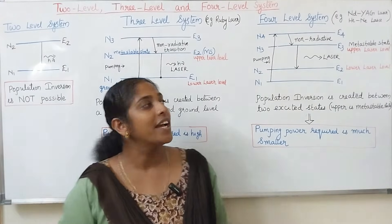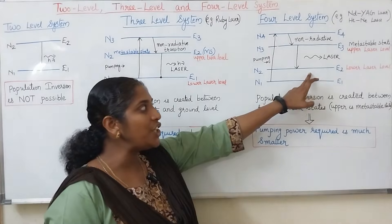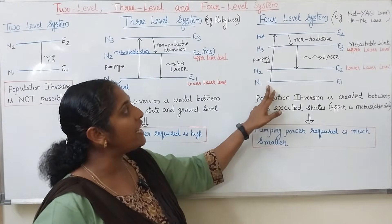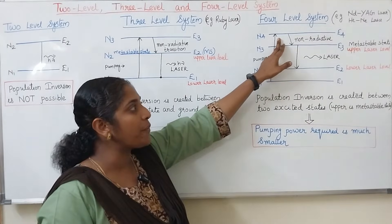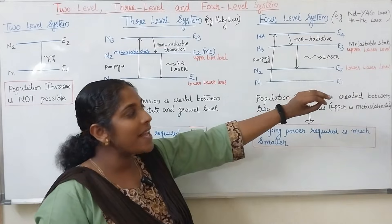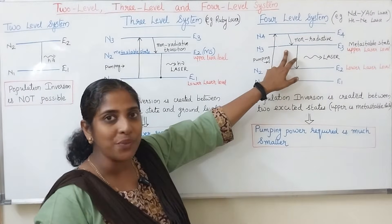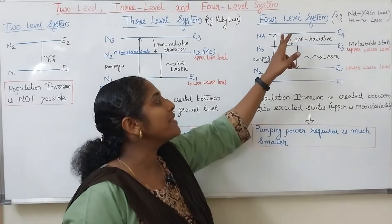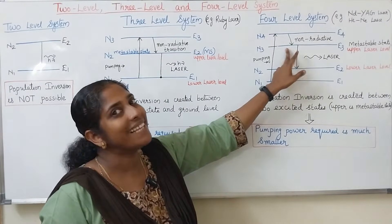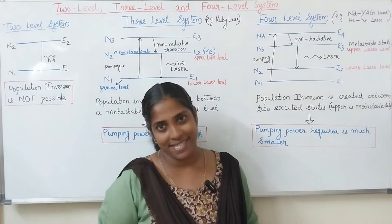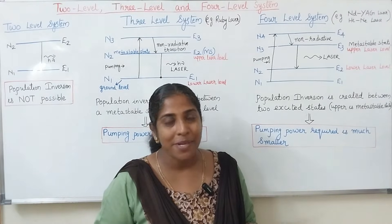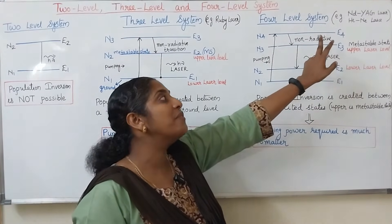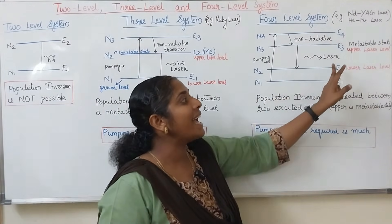Now coming to the 4 level system. In the 4 level system, we have 4 energy levels: E1, E2, E3, and E4. By pumping mechanism, we raise the atoms from the lower level to the excited level E4. From E4, the atoms make a fast non-radiative transition to E3, because E4 is the excited level with a very short lifetime. E3 is a metastable state with a long lifetime, so atoms are retained there for a long time and population inversion is achieved between levels E3 and E2.